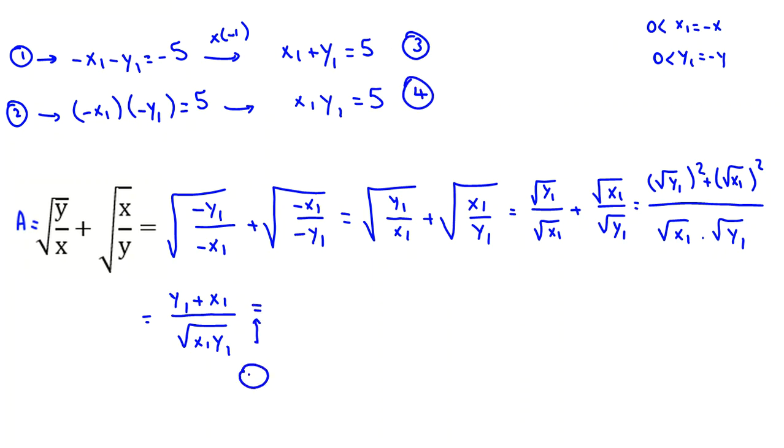From 3, I can say the numerator equal to 5. And because of 4, I can say denominator equal to root 5. You can say 5 is root 5 times root 5 over root 5. I can cancel, so equal to root 5.